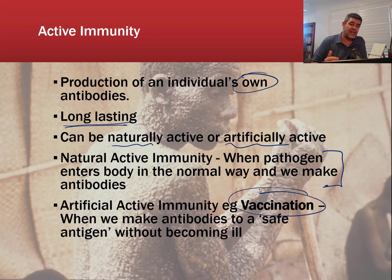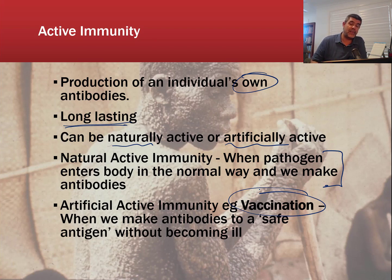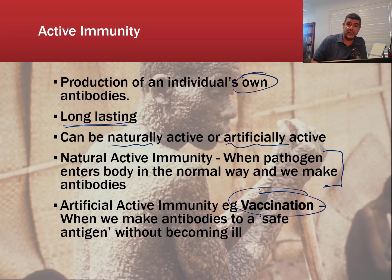The background picture here shows smallpox, one of the diseases we think we've actually eradicated through vaccination. A lot of debate around vaccination exists because, COVID notwithstanding, many of us have been separated by several generations from some of these very serious childhood diseases, so we don't always appreciate how bad it was when young people contracted them. So there are two ways for active immunity: natural and artificial.